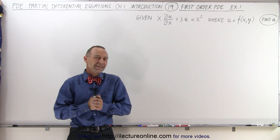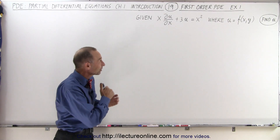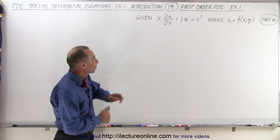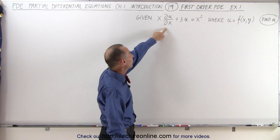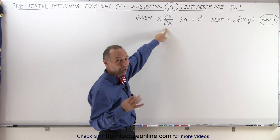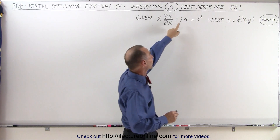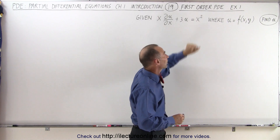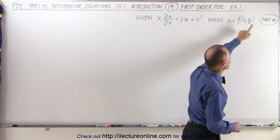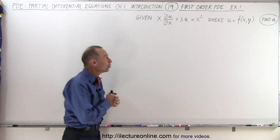Welcome to our lecture online. Now let's see if we can solve this particular partial differential equation. Notice that one of the terms is not there, so we have x times the partial of u with respect to x. The partial of u with respect to y term is not there, plus 3u equals x squared. We have u as a function of x and y, and we're supposed to find u.